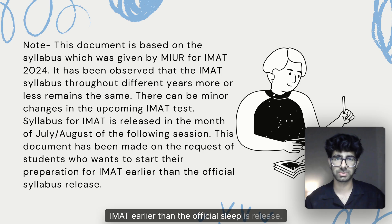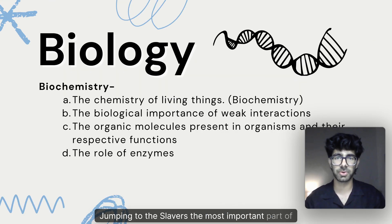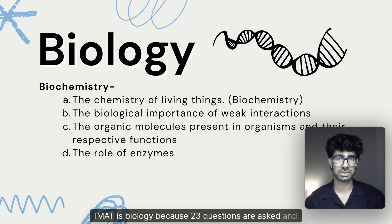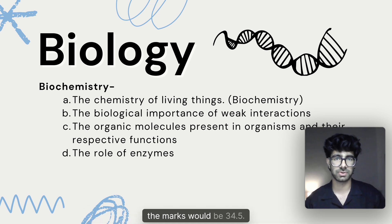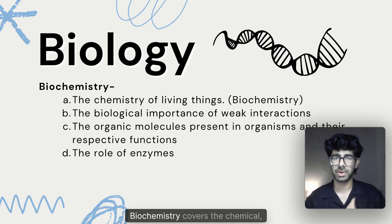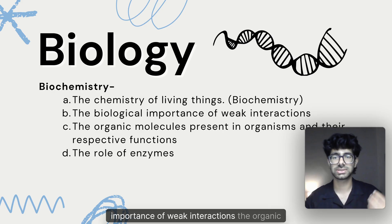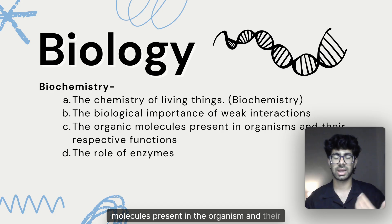The most important part of IMAT is biology, because 23 questions are asked and the marks would be 34.5. For biology, we have the unit of biochemistry, which covers the chemistry of living things, the biological importance of weak interactions, the organic molecules present in the organism, and their respective functions, as well as the role of enzymes.